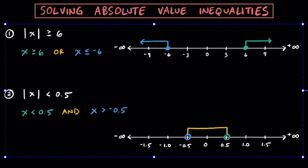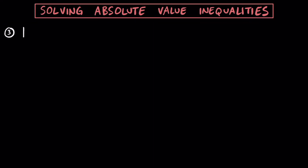Let's try a few more together. For a third example, let's try the absolute value of X minus 5 is going to be greater than or equal to positive 7. We turn this into a compound inequality. For the first statement, dropping the absolute value symbols, we have X minus 5 is greater than or equal to positive 7. Because we have a greater than symbol, we say OR. For our other statement, X minus 5 is going to be less than or equal to negative 7 — we flip the inequality symbol and write negative 7 instead of positive 7.